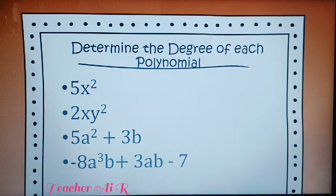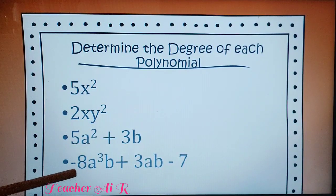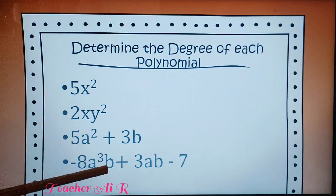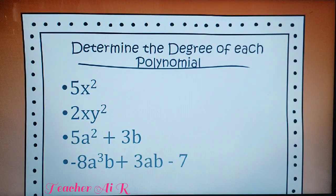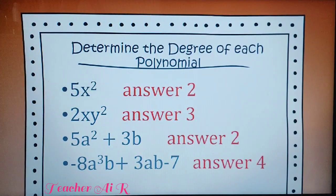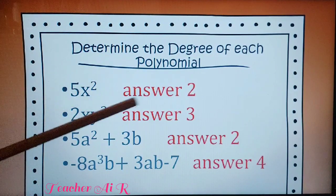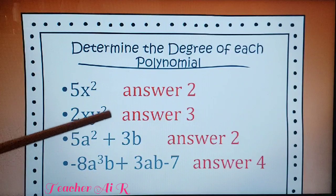Now let's determine the degree of each polynomial. We have 5X squared, 2XY squared, 5A squared plus 3B, and negative A cubed B plus 3AB minus 7. The degree of 5X squared is 2 because the exponent is 2. For 2XY squared, the degree is 3 because we have 2 for the Y and 1 for the X, so 2 plus 1 equals 3.